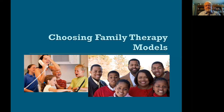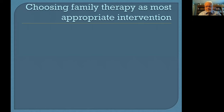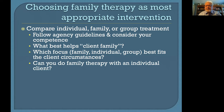When working with families, you need to choose some type of model to work with them — one that's the most appropriate intervention. Initially, you want to compare individual, family, or group treatments. To do this, you follow agency guidelines and consider your own competence and ability to do these types of treatments.